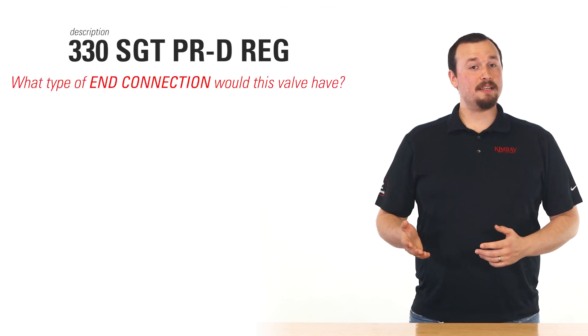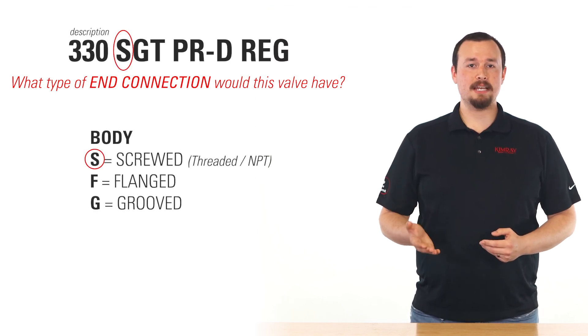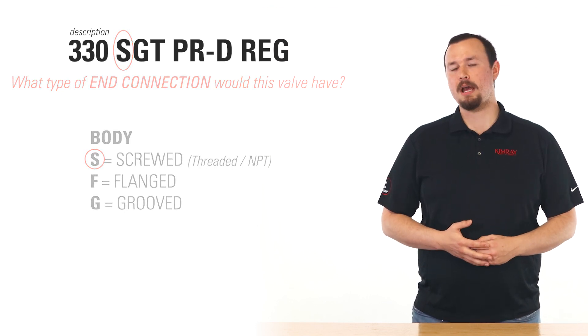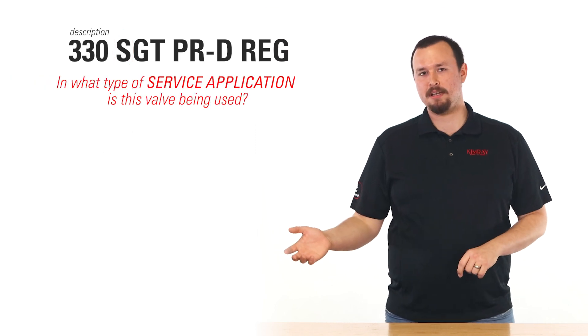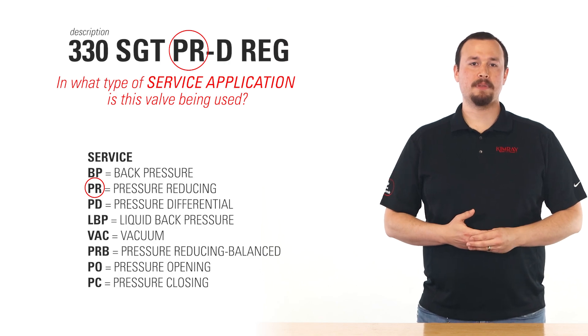Here's a product description: 330 SGT PR-D REG. Can you identify what type of end connection this valve would have? The S in this description stands for screwed, which is an NPT end connection. How about application? The PR in this description stands for pressure reducing. If you ever encounter a missing or illegible tag, just take a few photos of the product and contact product applications. For any other questions about naming configurations, leave a comment below or contact your local Kimray store or authorized distributor.